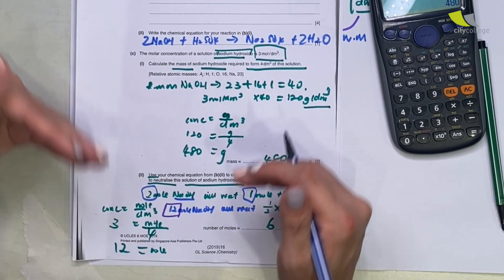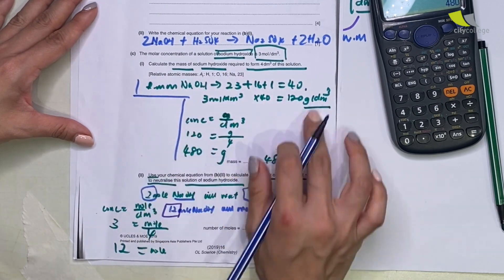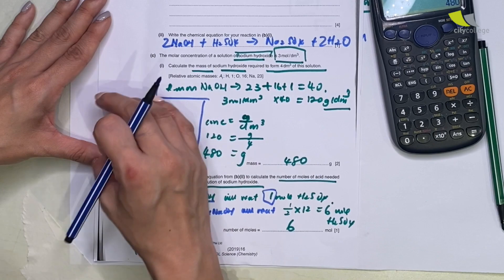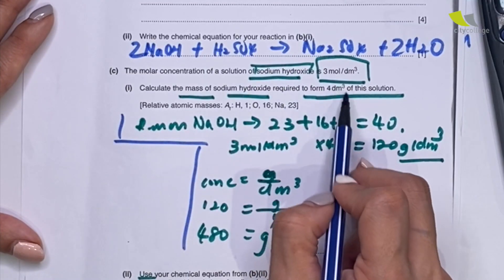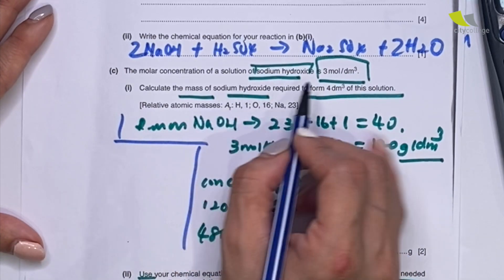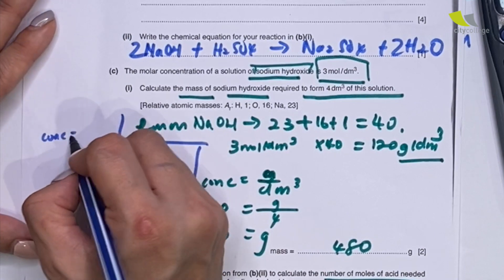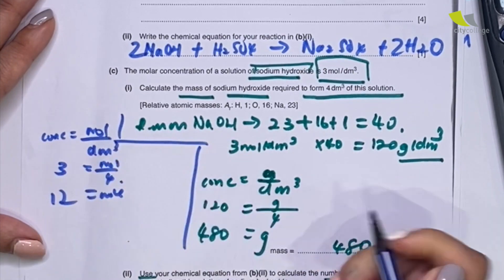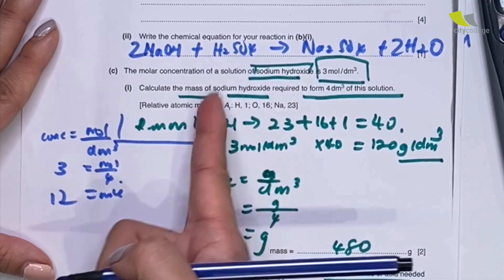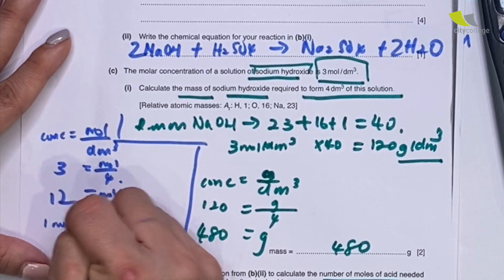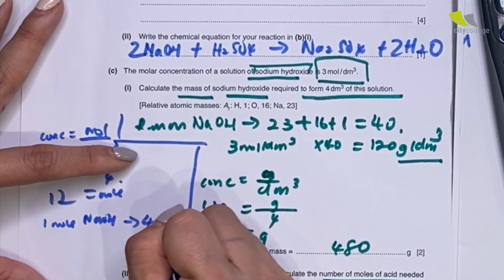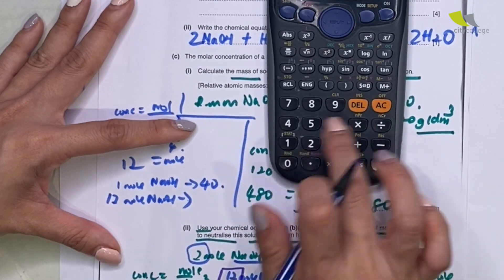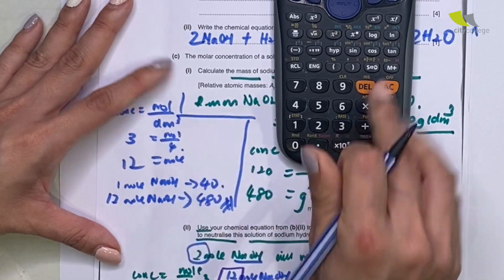Let me also show a second method for finding the mass. NaOH is 3 mol/dm³ in 4 dm³. Using concentration equals mole over dm³: moles = 3 × 4 = 12 moles of NaOH. Since one mole of NaOH is 40 grams, 12 moles gives: 40 divided by 1 times 12 = 480 grams. Both methods lead to the same answer — use whichever you prefer.